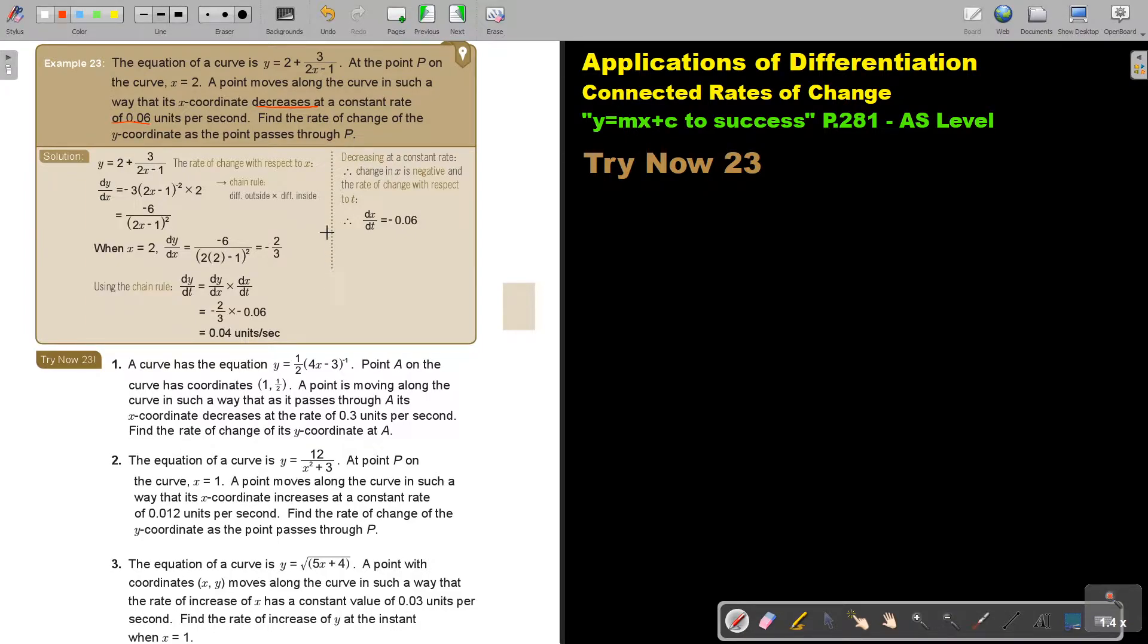Again, we are going to have two formulas. So we take this formula, the rate of change with respect to X, so we must first differentiate. Now just use the chain rule. This is a constant, so it's just going to become 0. If you take this up, then it's going to become negative 1. And if you take negative 1 and you times it with 3, you get negative 3. And then you subtract 1 and you get negative 2. And you multiply by differentiating the inside of the bracket, 2. So this, and then I simplify it.